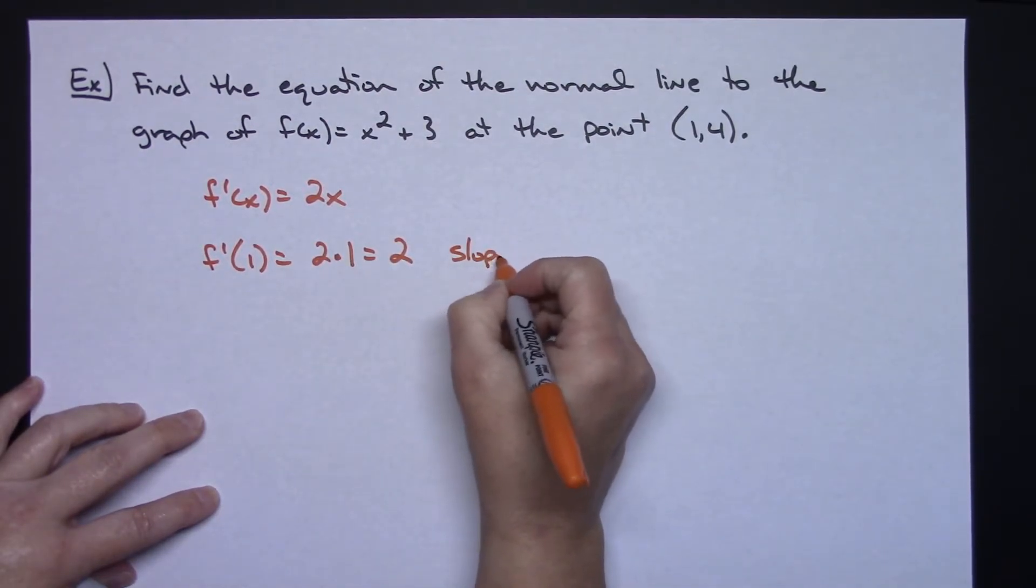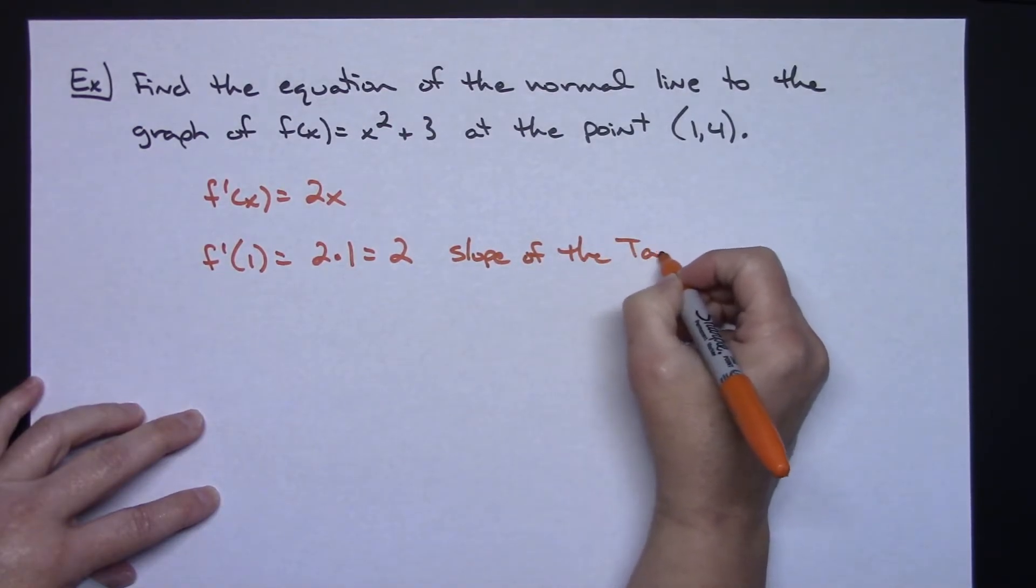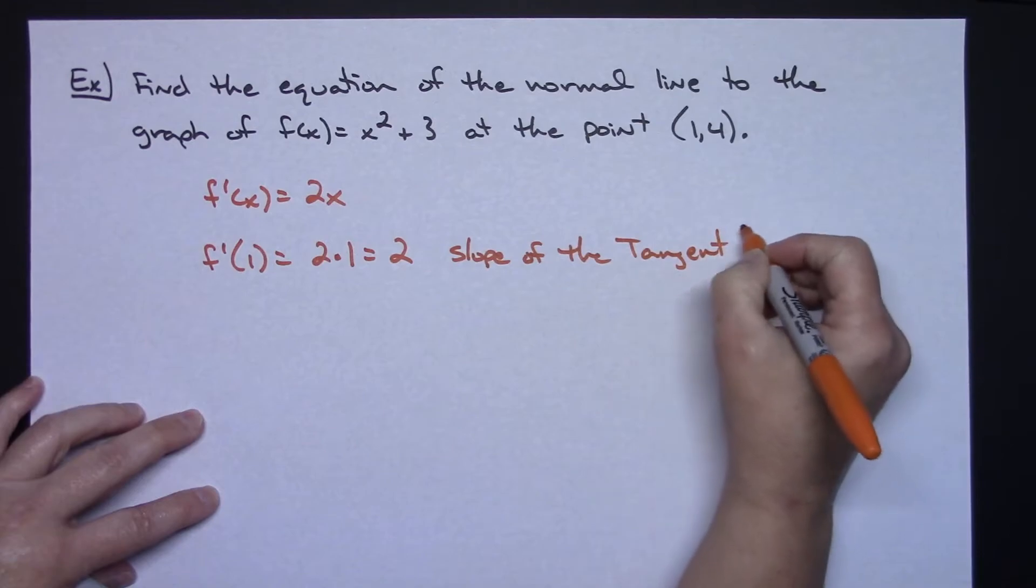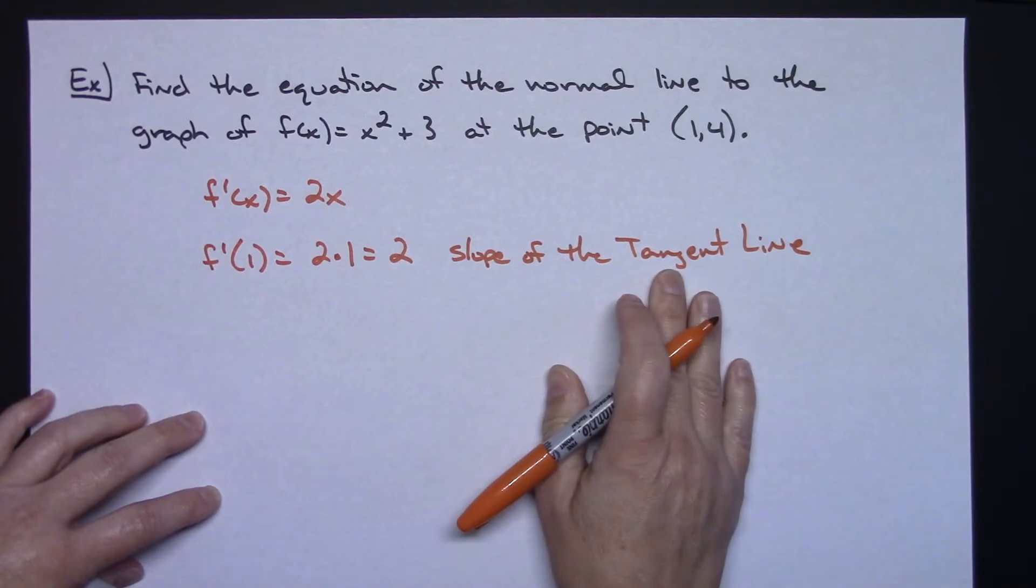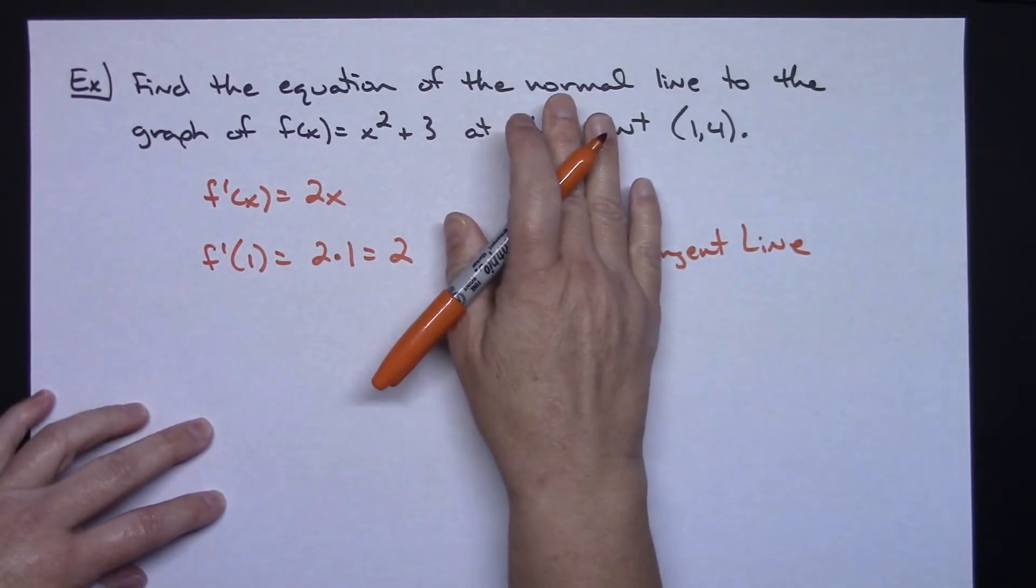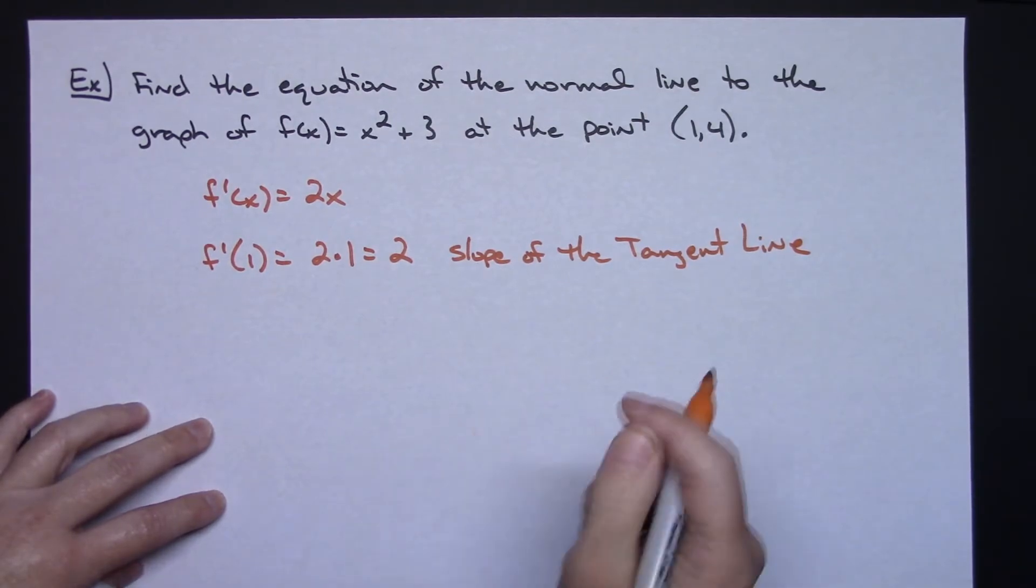Now this is the slope of the tangent line. Prerequisite skill that you've learned a long time ago. Now if I know the slope of the tangent line, then the slope of the normal line is just going to be the negative reciprocal of that.